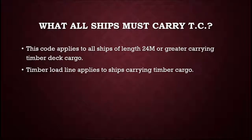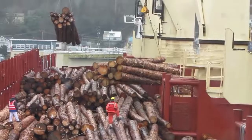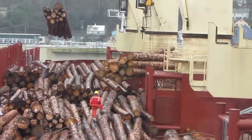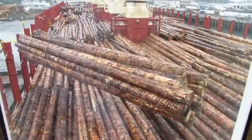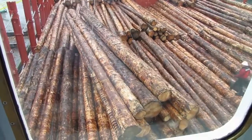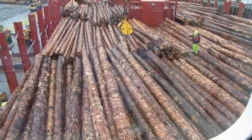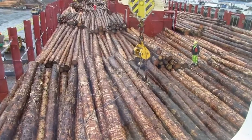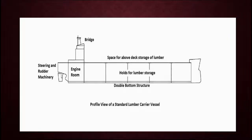Timber code applies to ships of length 24 meters or greater that carry timber deck cargo. If timber is carried only inside the cargo holds then this code will not be applicable. And if vessels carry timber on deck but are less than 24 meters, timber code will also not be applicable. Timber load line is a special load line that applies to ships that carry timber deck cargo or timber carriers.